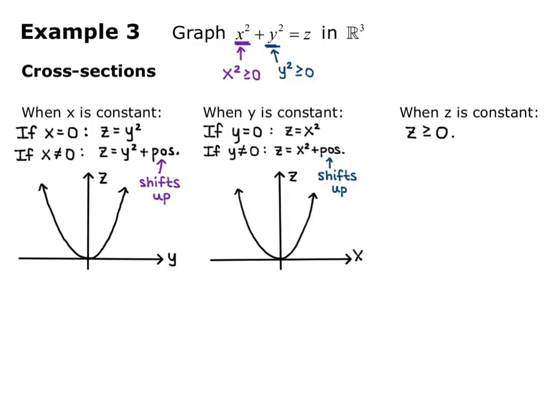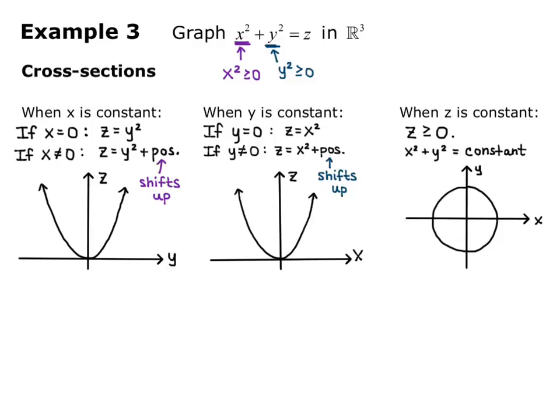When z is a constant, we know z has to be greater than or equal to 0 because z equals x squared plus y squared, and the right-hand side can never be negative. So when z is a constant, we get x squared plus y squared equals a constant, which is the equation of a circle. Parallel to the xy plane, we get circles of varying radii.